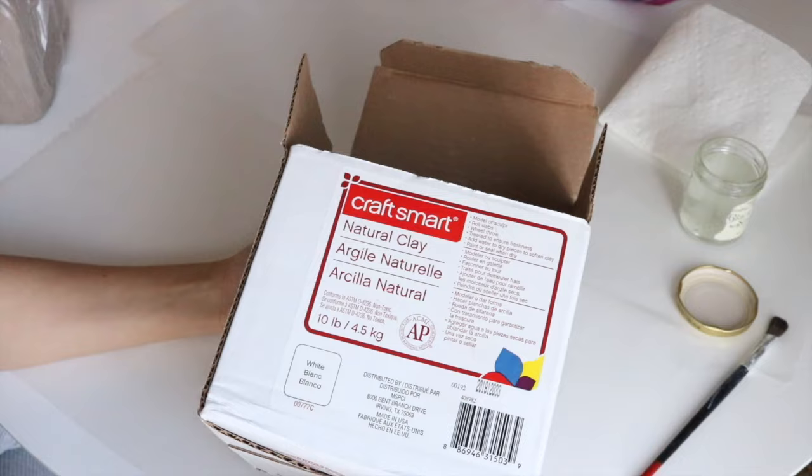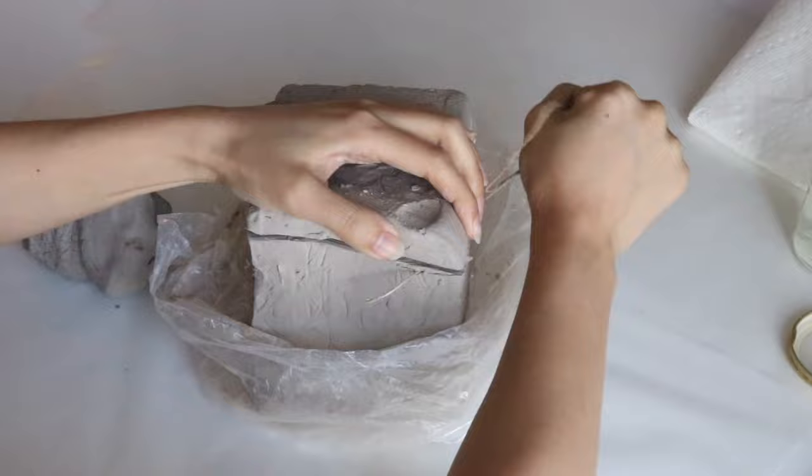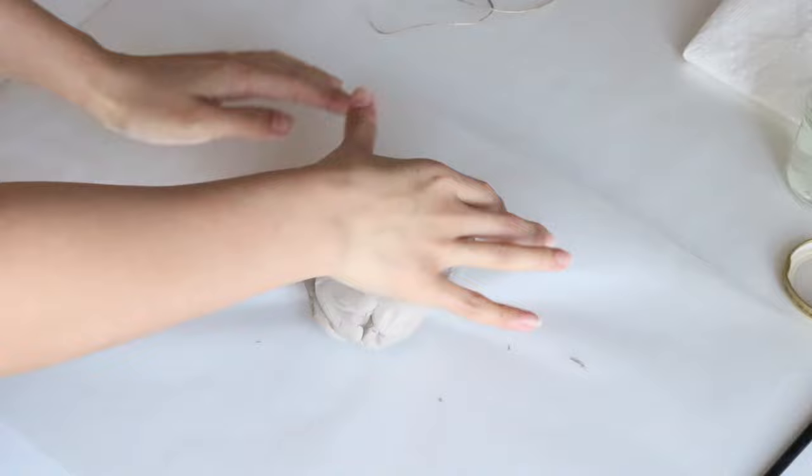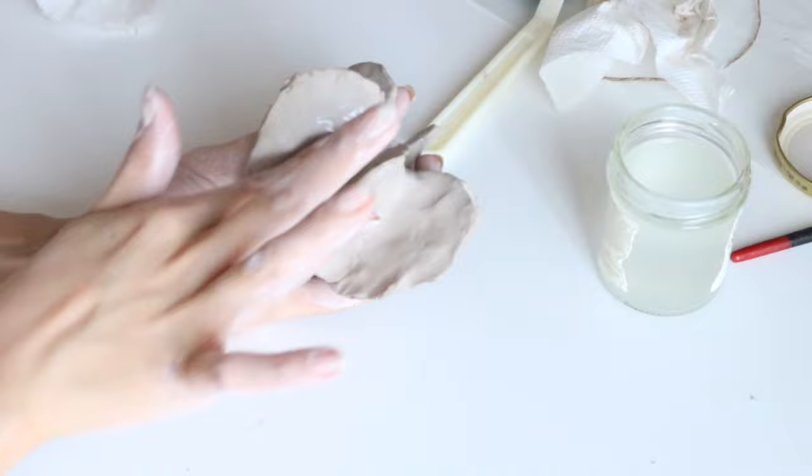For the first project we're going to recreate this unique bud vase from Etsy. The clay we're using is this natural clay by Craftsmart. I really like how this stuff feels like the kind of clay you throw on a wheel. The downside is that it can get very tacky, so I couldn't use wax paper. The upside is that this clay is really easy to smoothen out with water, making it easy to fix mistakes and blend pieces together.